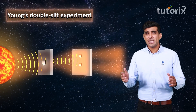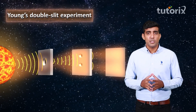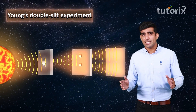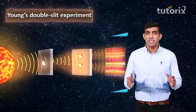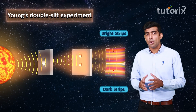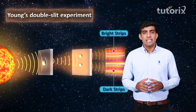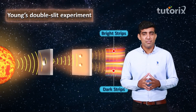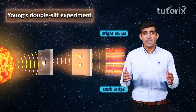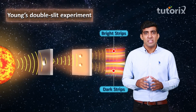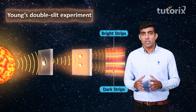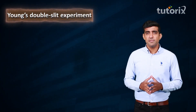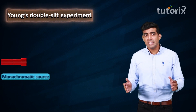A screen was placed at some distance from the cardboard, parallel to it. Due to the superposition of these two waves at different points on the screen, an interference pattern was observed. This interference pattern is in the shape of dark and bright strips, signifying a variation in intensity of the resultant wave. Since sunlight is a combination of light of different wavelengths, the interference pattern observed was not sharp. A sharp interference pattern can be observed if we use light of single wavelength instead of sunlight.